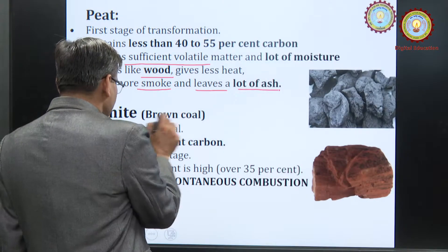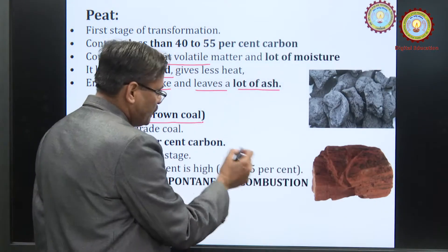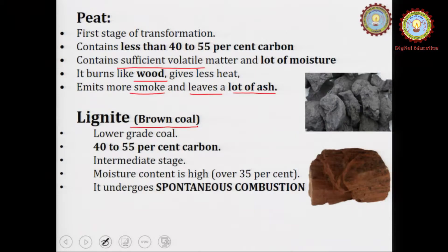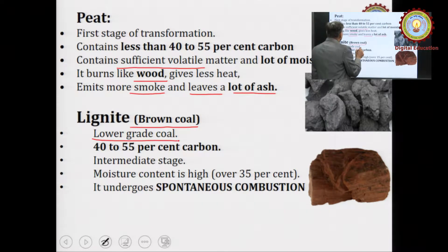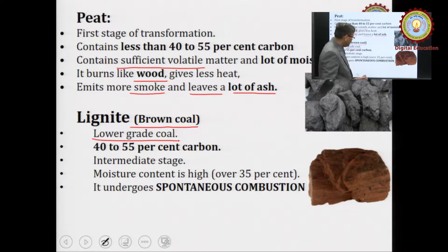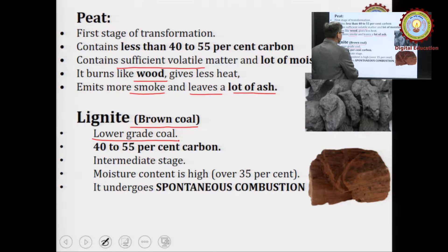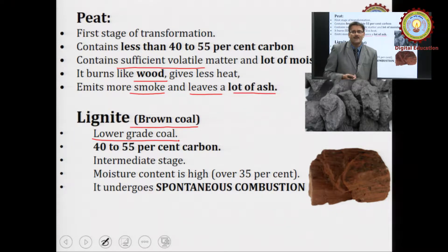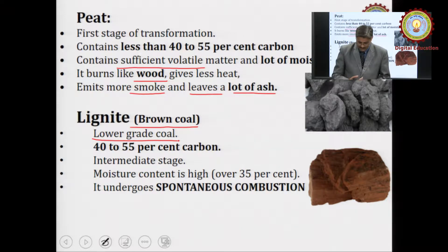Lignite is a brown coal, as shown in the figure, and it is a lower grade coal containing 40 to 55 percent carbon. It is an intermediate stage of transformation of coal. Moisture content is over 35 percent and it undergoes spontaneous combustion.